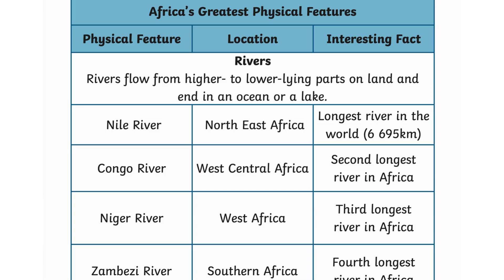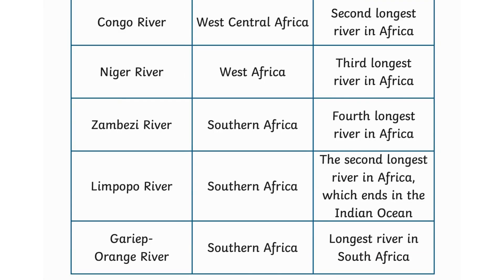Rivers flow from higher to lower lying parts on land and end in an ocean or a lake. The Nile River in northeast Africa is the longest river in the world. The Congo River in west-central Africa is the second longest river in Africa. The Niger River in west Africa is the third longest river in Africa.